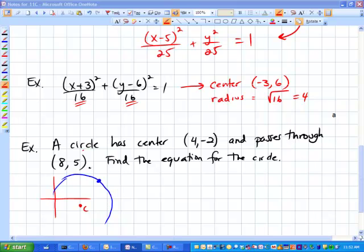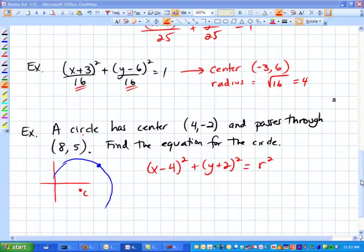But what's the equation going to be? Well, I'm glad you asked. One of the things I know for sure is that this much has to be true. X minus four quantity squared plus y plus two quantity squared equals the radius squared. But I don't know the radius.